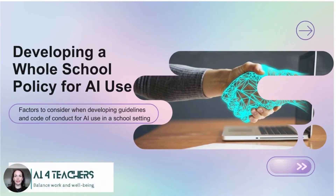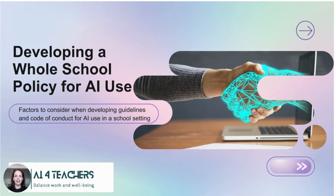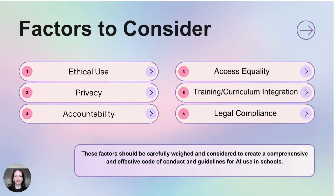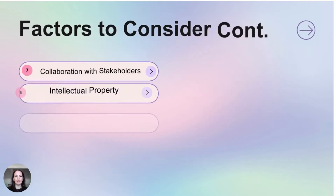Let's walk through the issues we need to evaluate when making an AI policy. When developing your whole school policy for AI, the different factors you're going to need to research and consider are: ethical use, privacy, accountability, access and equality — making sure that everybody has equal access to the technology — training and curriculum integration, legal compliance, collaboration with stakeholders, intellectual property, and future adaptability and evaluation. AI is going to continue to evolve, so we need to make sure that when we create our policy it will encompass future changes to AI.